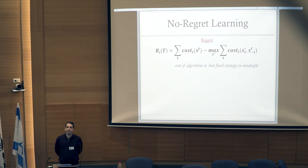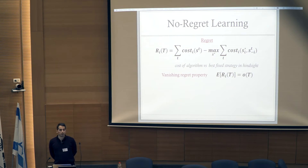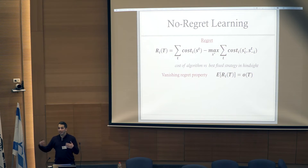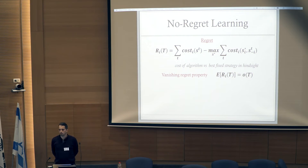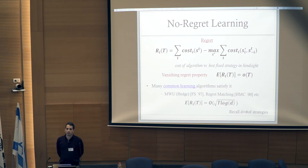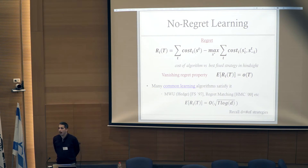The vanishing regret property, which we generally assume for learning dynamics, is that the expected average regret is vanishing over time — as time goes to infinity, the expected average regret goes to zero. Many common learning algorithms satisfy this, for instance multiplicative weights and regret matching, achieving a square root of T dependence on the time horizon.